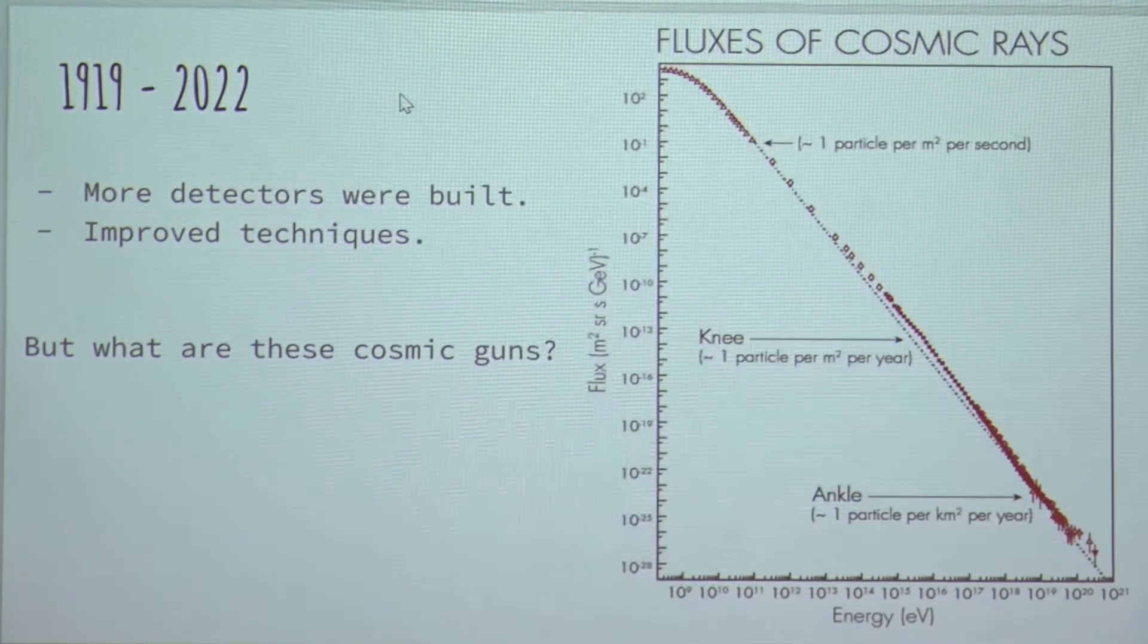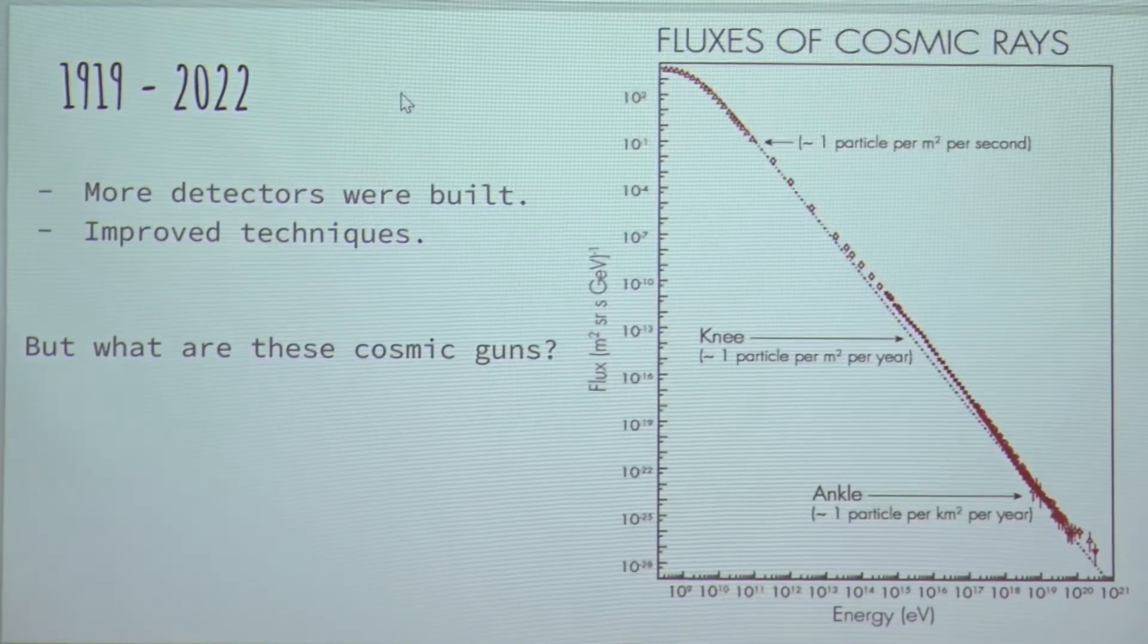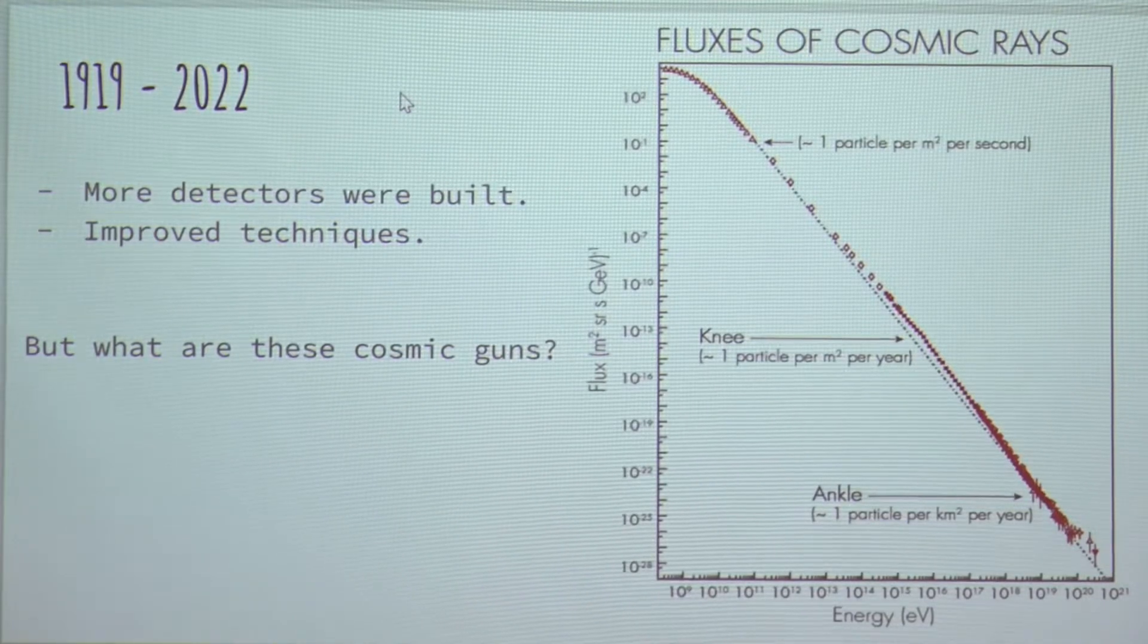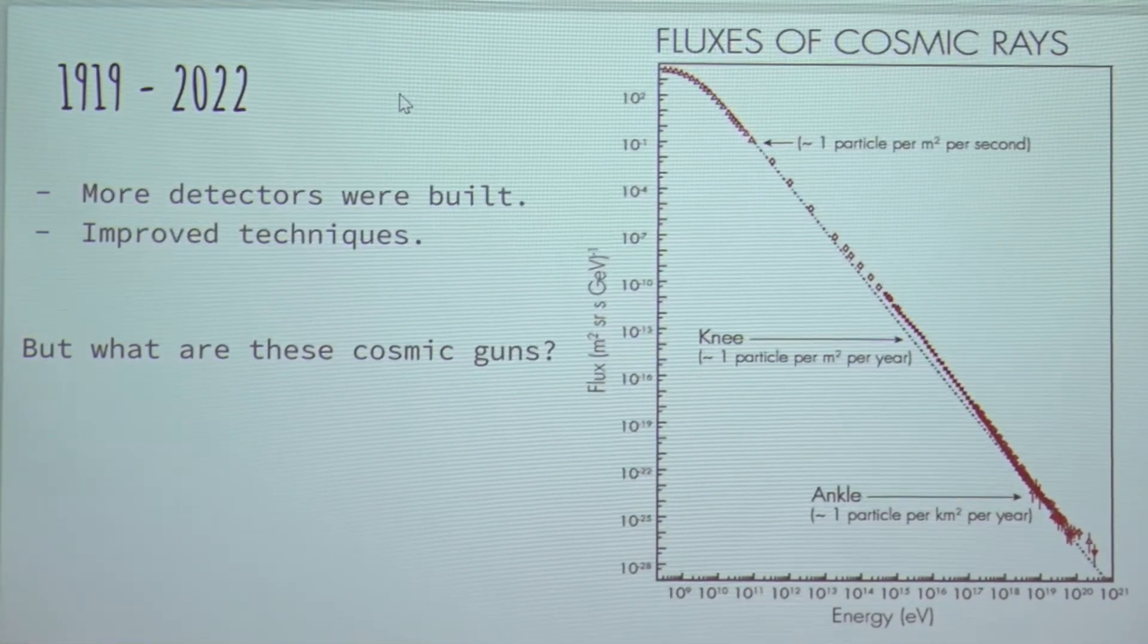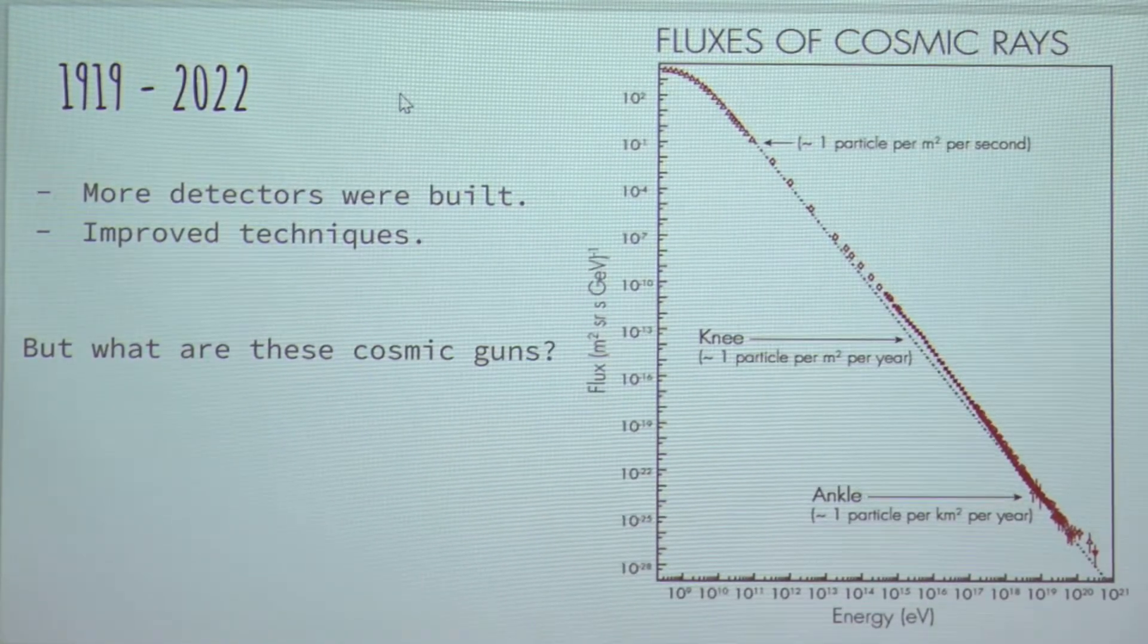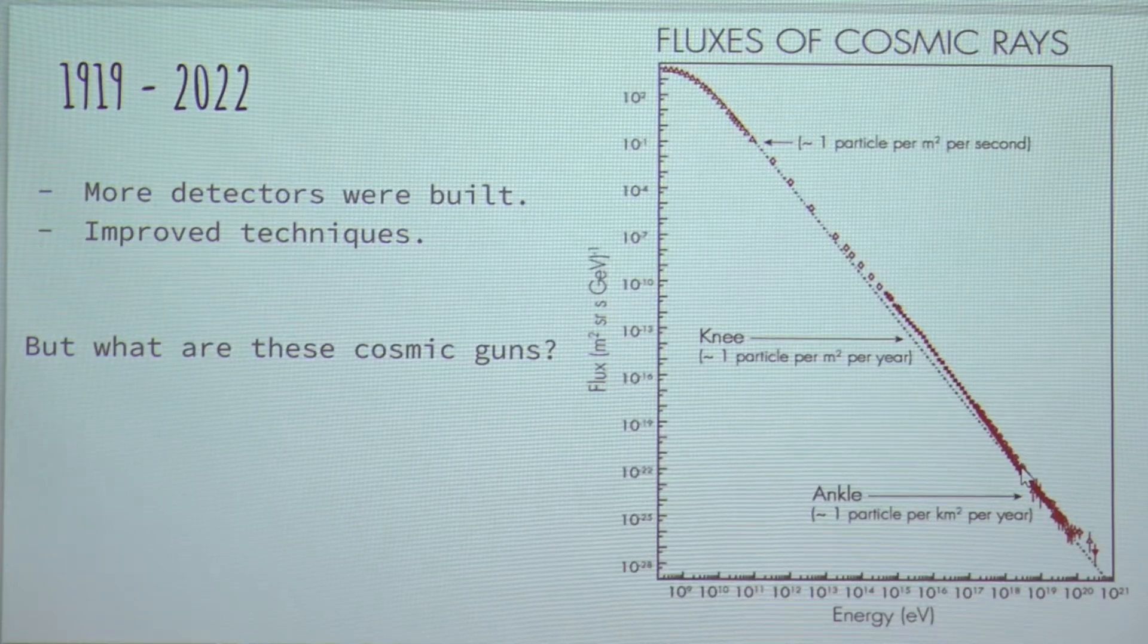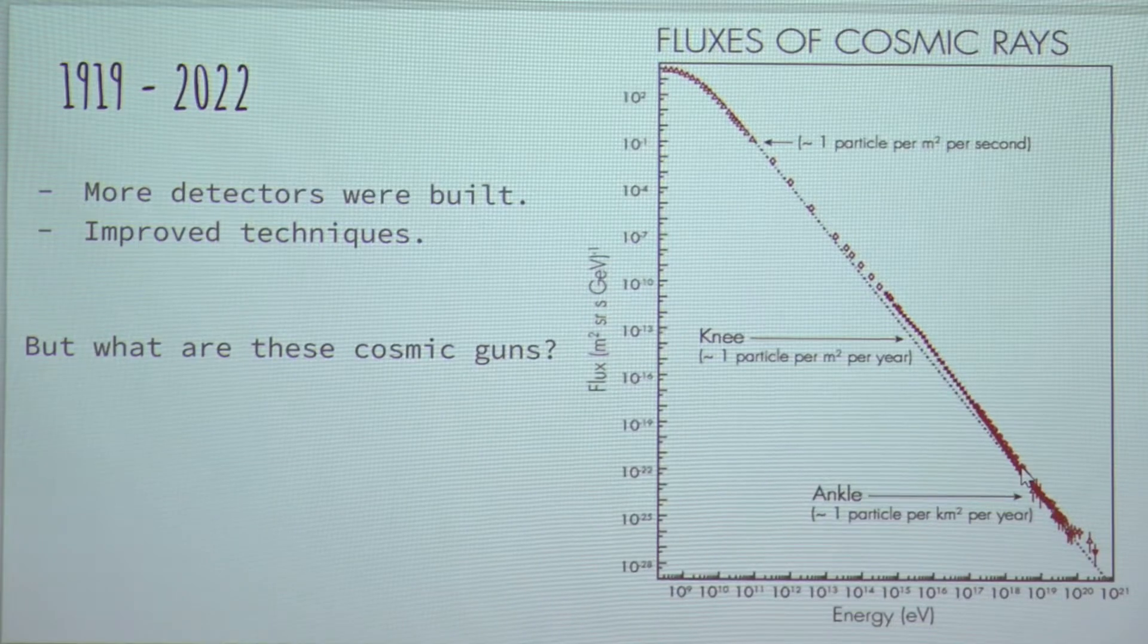But a lot has changed. We have more data than ever now. And the plot on the right shows you the flux that we have of cosmic rays now. So on y-axis, we have the flux or the number of these particles with respect to energy on the x-axis. Mathematically, this data can be defined by a power law. And you'll notice a few features here and there. And you could also think of this data as a human leg with a knee and an ankle, signifying the features that we see in this curve.